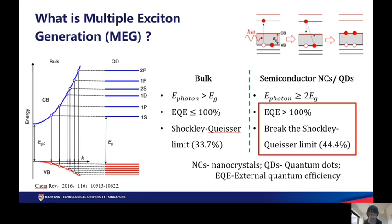However, the thermal relaxation is not the doom of the high-energy photons. It is found that in quantum dots or nanocrystals, because of the quantum confinement effect, the hot carrier cooling time can be prolonged, and the strong interaction between carriers in the quantum dots provides a new carrier relaxation channel.